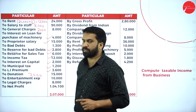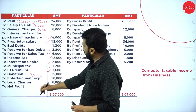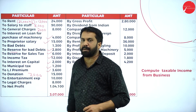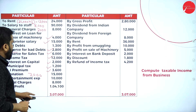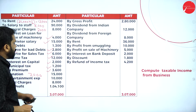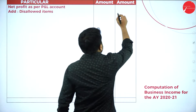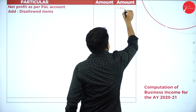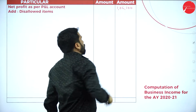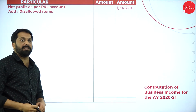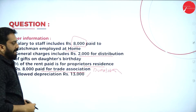Net profit we take in the beginning. Net profit is ₹1,04,100. Now I'll go through expenses one by one.